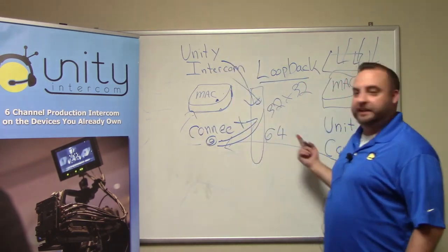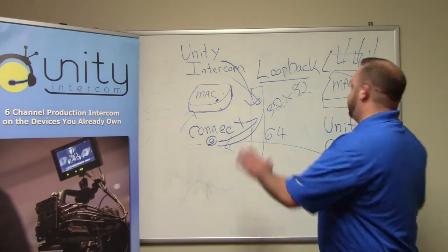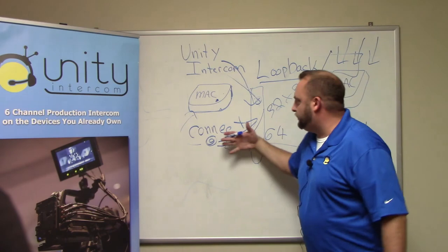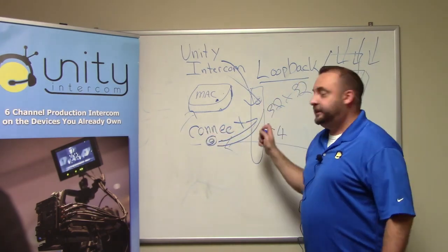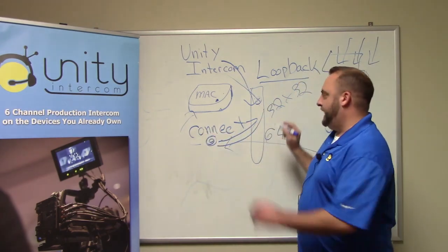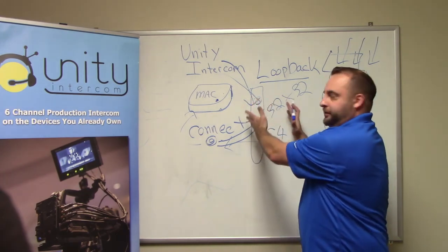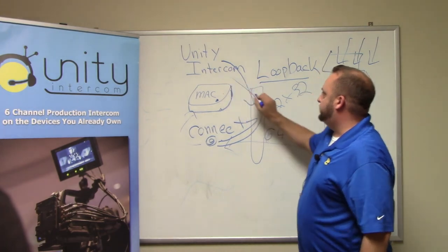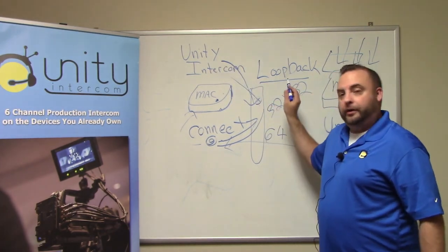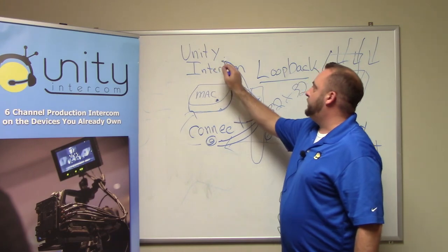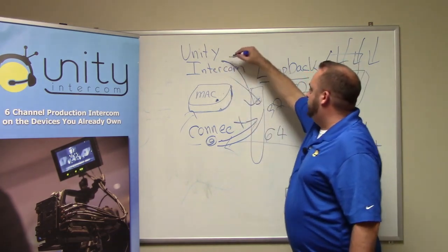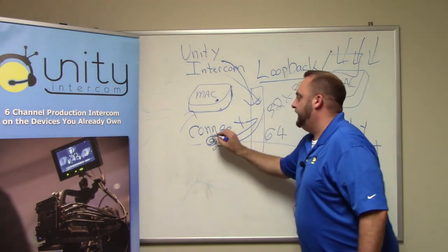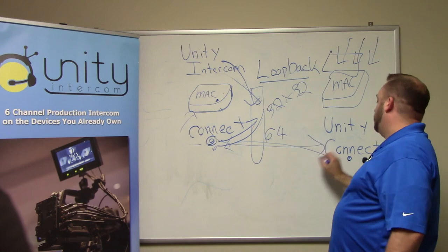I realize this looks awful, but essentially all this is is audio coming from the event or from whatever, being sent over via Connect to another Connect, writing to Loopback. Loopback acts like an I/O device, only it's software. And we are going to read from that software from Unity Intercom. This is also how we would take Unity Intercom's audio, and route out of a party line channel to Loopback — Connect would read from Loopback, and Connect can also send back to another Connect.